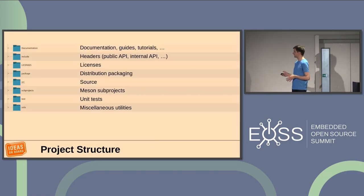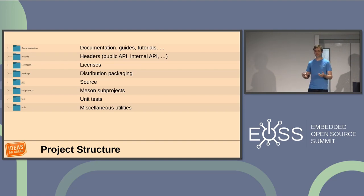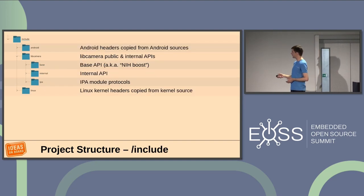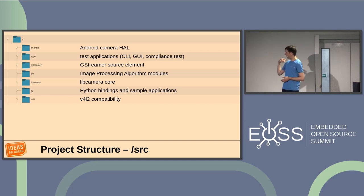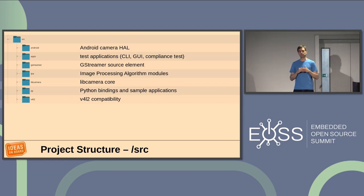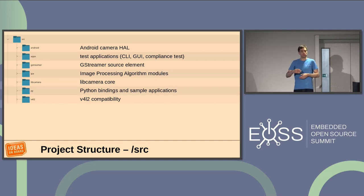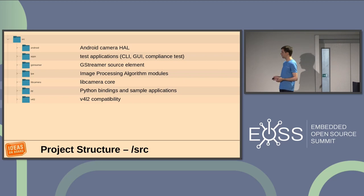Navigating libcamera: at the top level you have just a few directories. We have an include directory and a source directory with different components. We have the core libcamera in the libcamera directory. We have Python bindings. We have adaptation layers that adapt towards existing frameworks — a GStreamer element implementation, a V4L2 compatibility layer that emulates video for Linux for native V4L2 applications, and an Android camera HAL implementation.